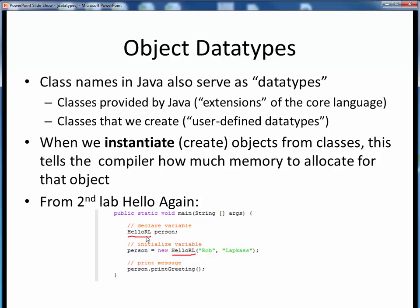So objects in Java also have data types. Their data types are of the class from which they were created or instantiated.